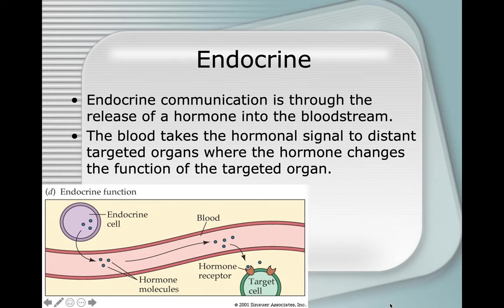Endocrine communication is through the release of a hormone into the bloodstream. The blood takes the hormonal signal to distant targeted organs where the hormone changes the function of the targeted organ. A good example is the pituitary gland talking to the adrenal glands on top of your kidneys. The pituitary releases corticotropin-releasing hormone, which travels through your bloodstream and signals the adrenal glands to release cortisol.